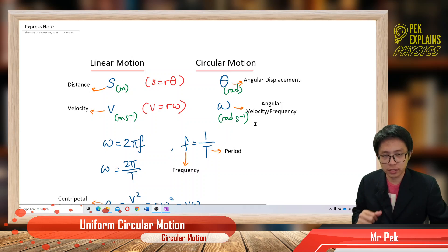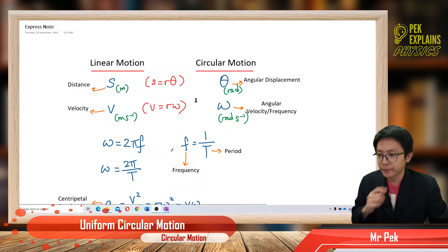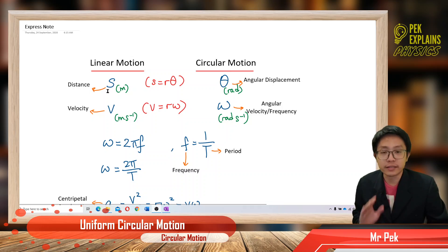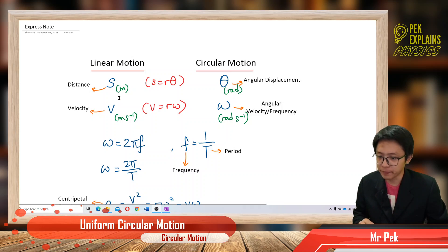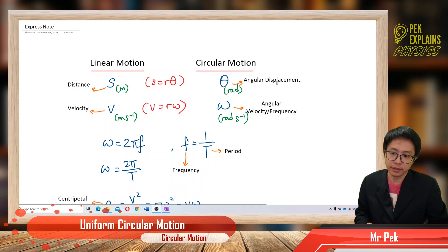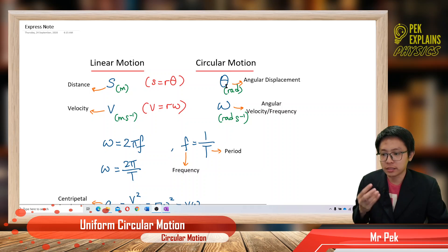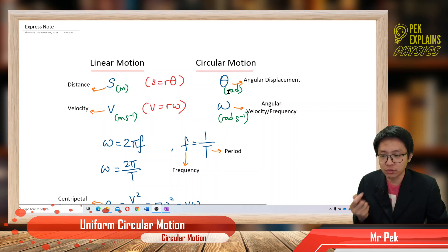Before we discuss some questions, I want to do a simple summary. In linear motion we have distance, which is measured in terms of length, so the unit is meter. For circular motion we have angular displacement — it is called angular because it is described in terms of angles, and the unit is radians.